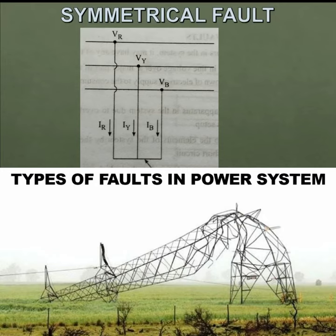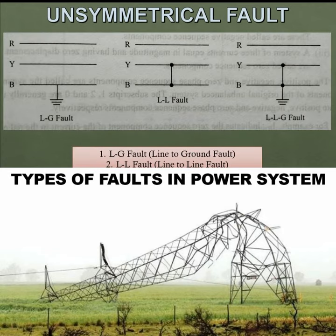In a 3-phase line with phases R, Y, and B, when all three phases are equally affected, that is called a Symmetrical Fault. Most of the time, however, the fault that occurs is an unsymmetrical fault.